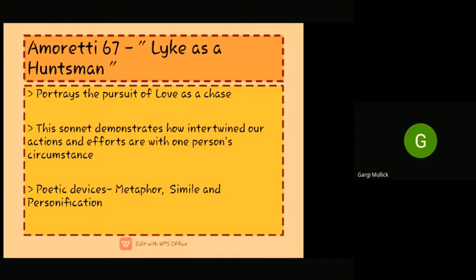The deer sees the hunter sitting there in the shade and, seeing that he is no longer hunting her, she decides that he is not a threat, and she comes straight to him without fear. Because of the deer's trust, the hunter was then able to easily rope a cord about her neck and capture her. He then notes how strange it is to see a wild animal so tame as to be caught in that way. This is the literal sense of the poem.